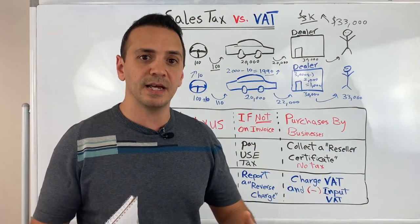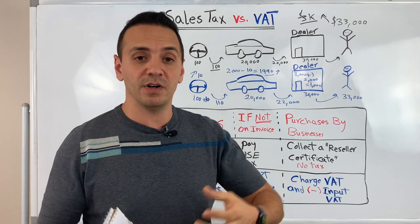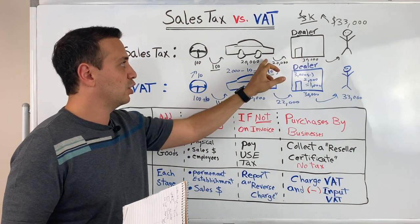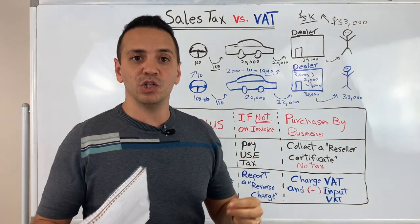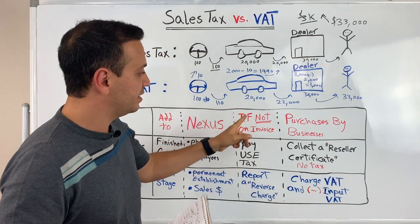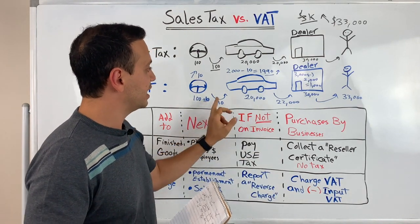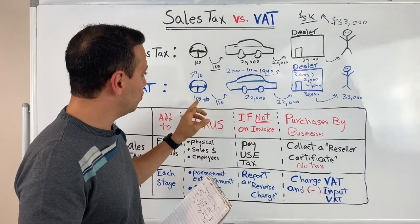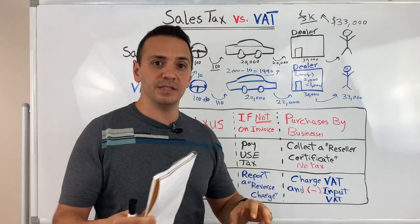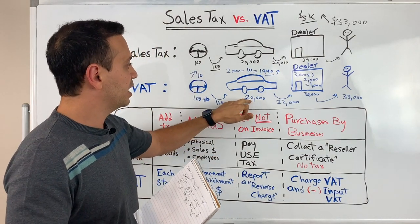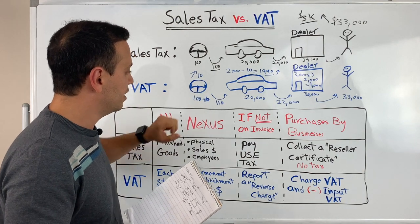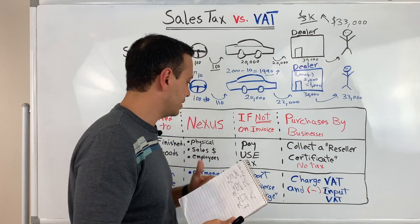The last difference relates to purchases by businesses — B2B sales. If you're a business buying from another business for the purpose of processing or reselling goods, like the car manufacturer selling to a dealer, the car manufacturer can obtain a reseller certificate from the dealer and doesn't have to add sales tax to the invoice. However, with VAT, it is added at every stage of the supply chain all the way through to the end — but every business gets to collect VAT and deduct their input VAT. The car manufacturer pays 2,000 euros to the government but deducts the 10 euros paid to the steering wheel manufacturer in VAT.